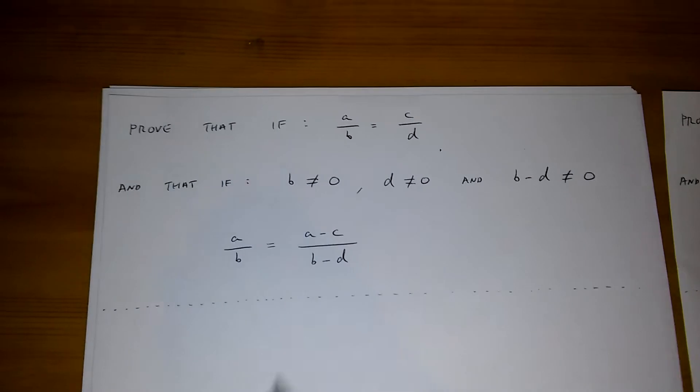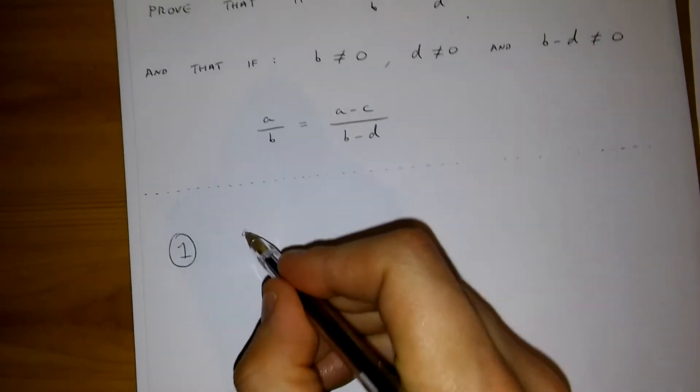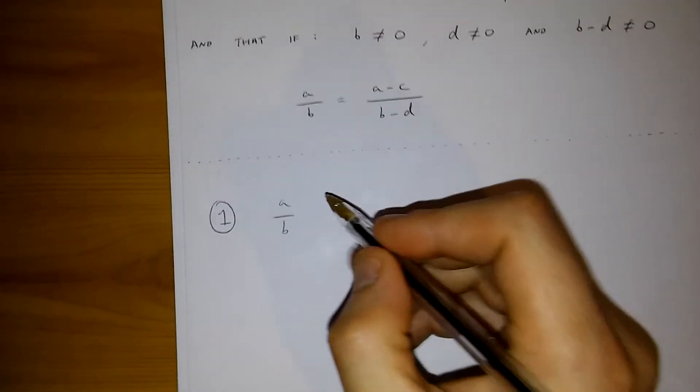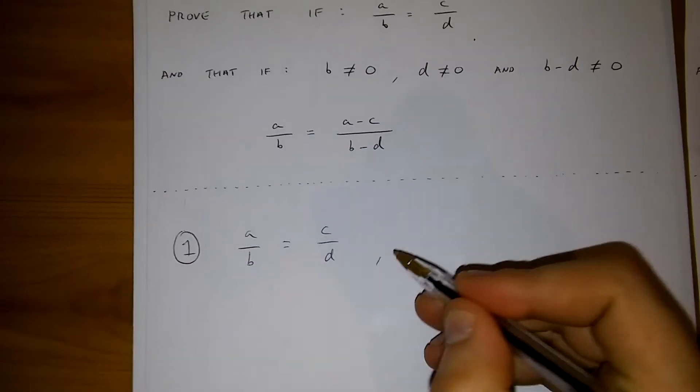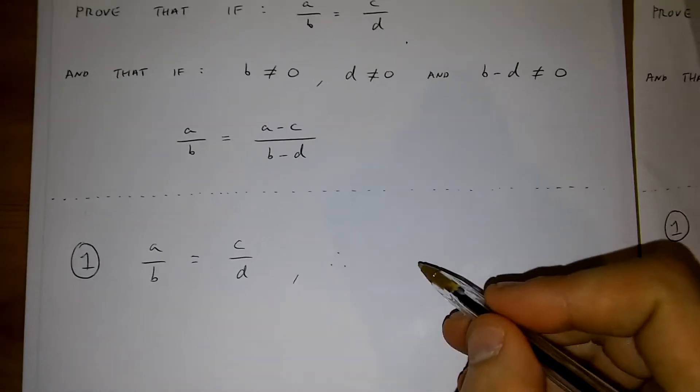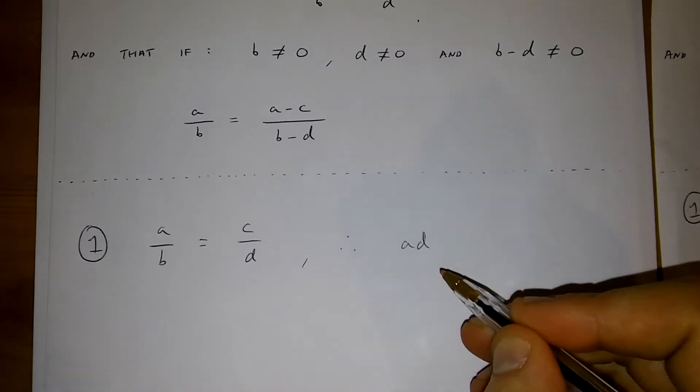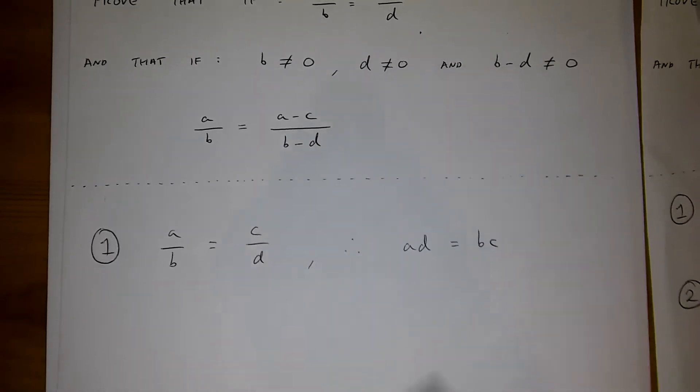Now, to prove this, I first have to say that if a over b is equal to c over d, this means that ad is equal to bc.